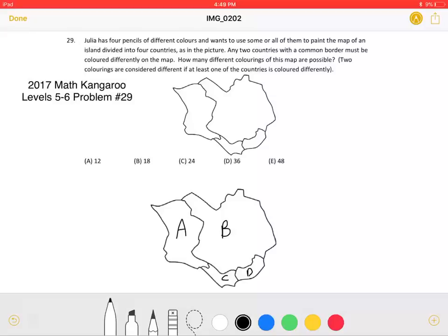This is the 2017 Math Kangaroo Levels 5-6 Problem No. 29. Julia has four pencils of different colors and wants to use some or all of them to paint the map of an island divided into four countries, as in the picture.